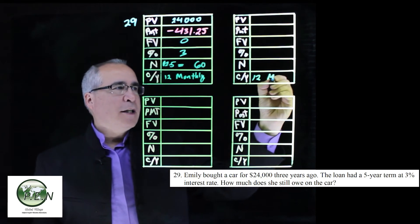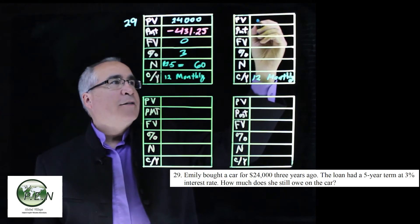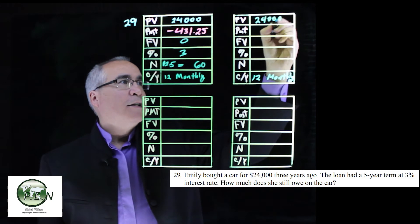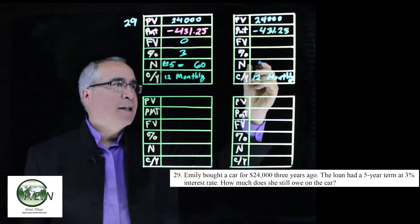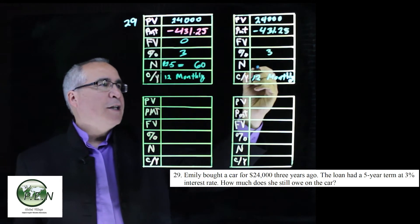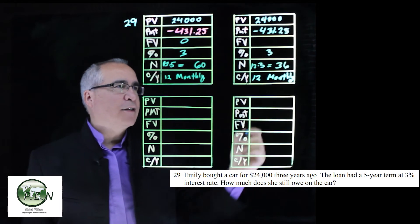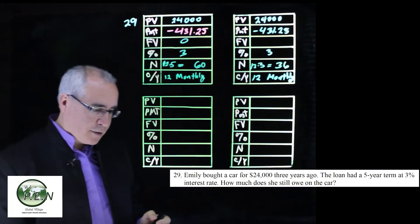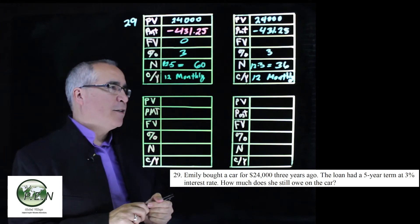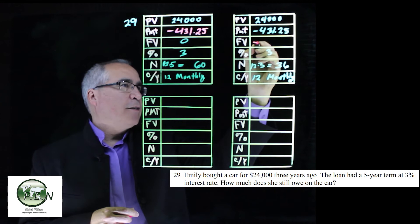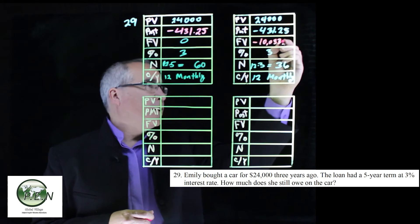So most everything's the same. It's still monthly, the initial balance or the initial loan is still $24,000. The payment is still $431.25 that we calculated, still 3% interest. But what we're going to do is she's now only three years into this loan. 12 times 3, 36. She's made 36 payments. We want to see what is owed on this, and we can do that by clicking on the future value, and we see that 36 payments into this loan, it would still have a balance of $10,033.37.